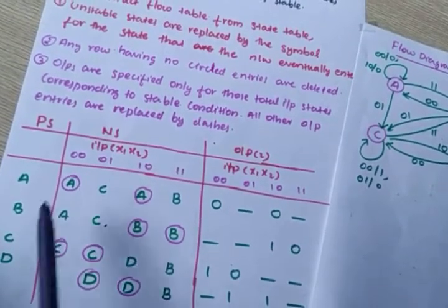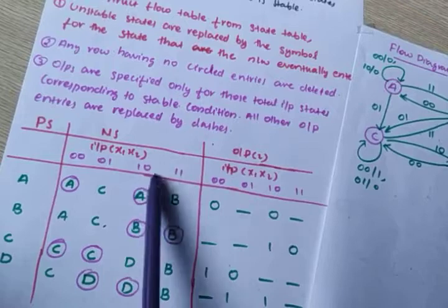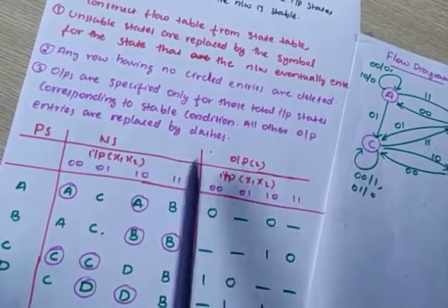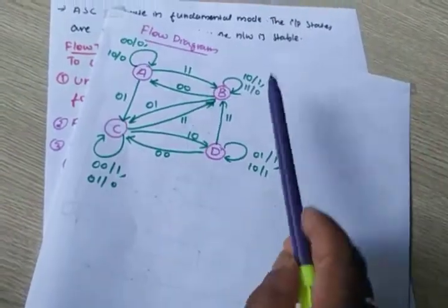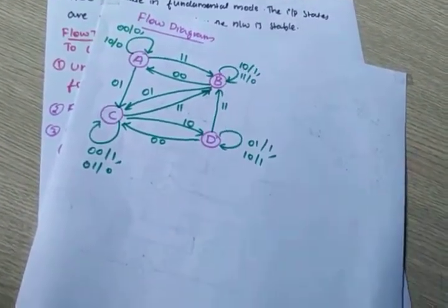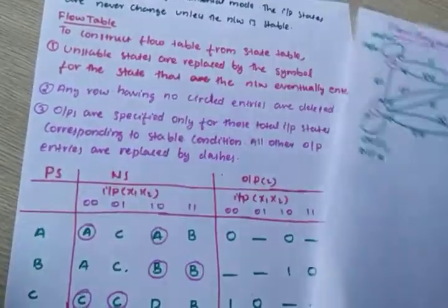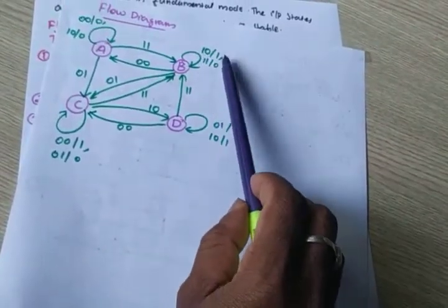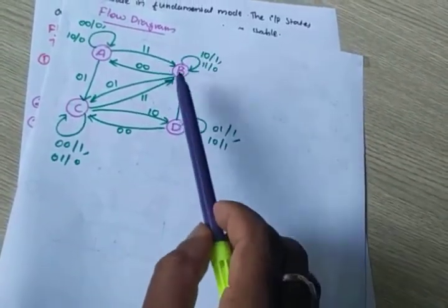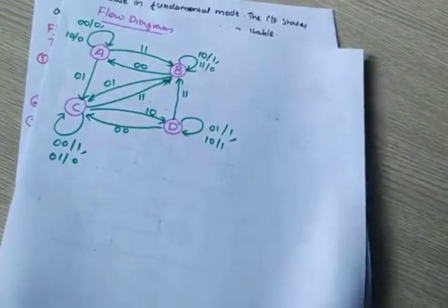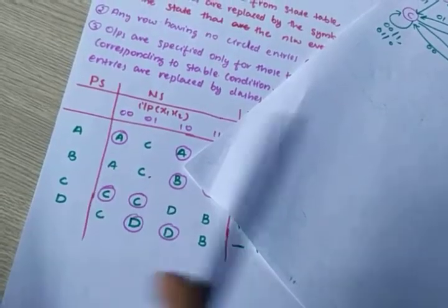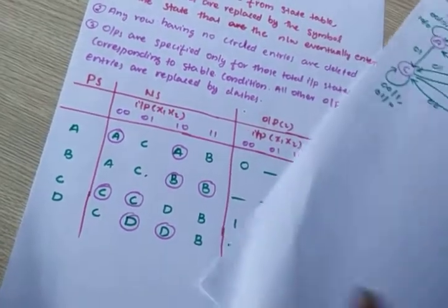Now B: for B with inputs 1,0 and 1,1, it is a self loop — B goes to B only. For 1,0 and 1,1, what is the output? Output is 1,0 and 1,1 respectively — it is 0. For B with input 0,0, it is going to A state, and output is dash.